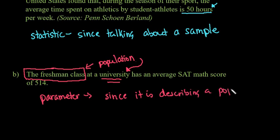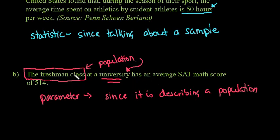One of the biggest mistakes I see students make is they think this is a sample because it's just one university. But remember, this is the population for that specific university. I can only compare this information to this single university — it is not a sample, it is the population of that specific university. Hopefully this video helped you identify the difference between a sample statistic and a population parameter. If you have any questions or additional topics you'd like me to cover, please let me know.